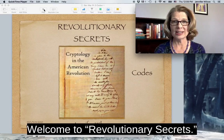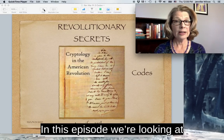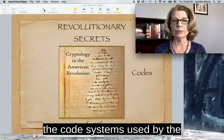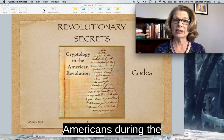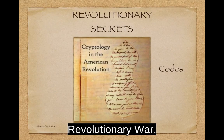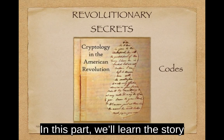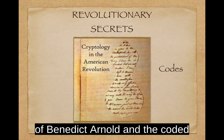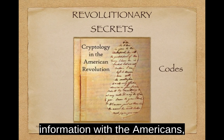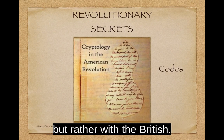Welcome to Revolutionary Secrets. In this episode, we're looking at the code systems used by the Americans in the Revolutionary War. In this part, we'll learn the story of Benedict Arnold and the coded messages he used — not to share information with the Americans, but rather with the British.